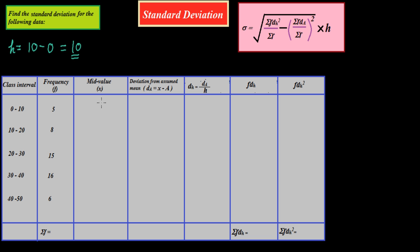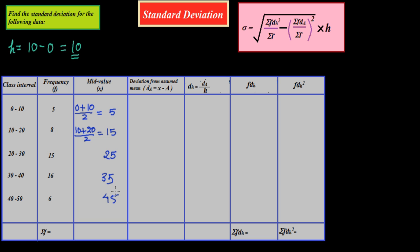So we find the mid value X. For example, 0 plus 10 divided by 2 is 5, and 10 plus 20 divided by 2 is 15. Since all class widths are equal at 10, we can simply add 10 each time: 5, 15, 25, 35, and 45. This is how we find the mid values of each class interval.